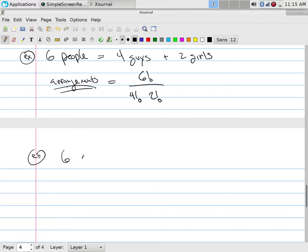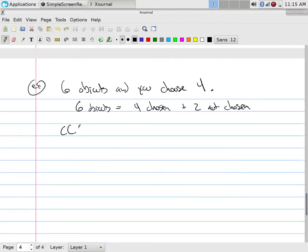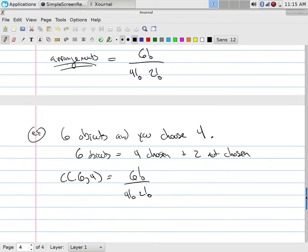This problem is the same thing that happens if I say I have 6 objects and you choose 4. What you just did was break these 6 objects into 2 groups: those you chose and those you didn't choose. So really what we said is we have 6 objects are actually 4 that are chosen, 2 that are not chosen. So if you have 6 and you're going to choose 4, the formula says it's 6 factorial divided by 4 factorial 2 factorial. Is that just the division rule?